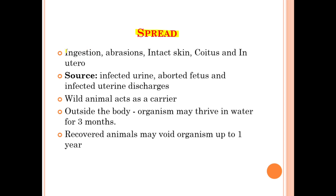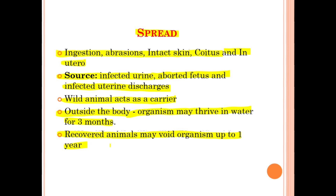The routes of infection can be ingestion, abrasion, intact skin, coitus, and in utero. The sources of infection include infected urine, aborted fetus, and infected uterine discharges. Wild animals act as carriers. Outside the body the organism may thrive in water for three months. Recovered animals may void the organism for up to one year.